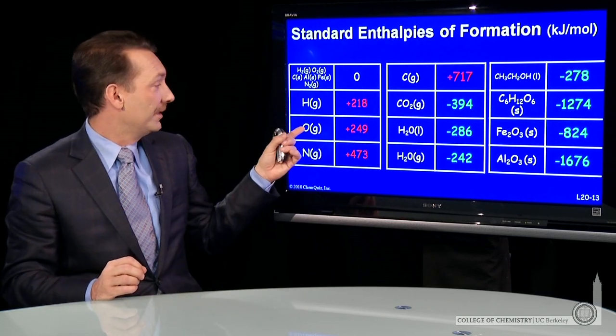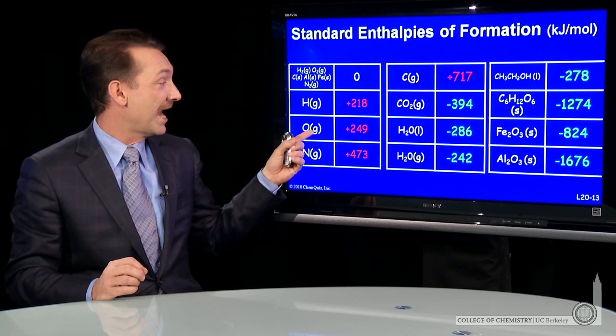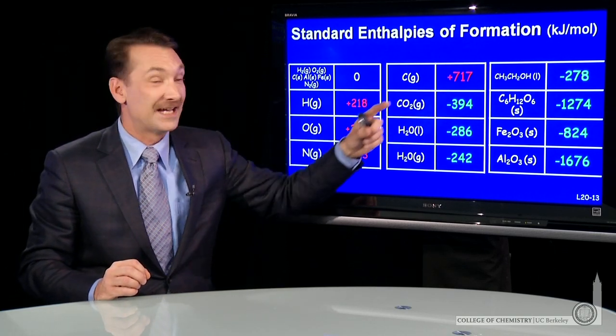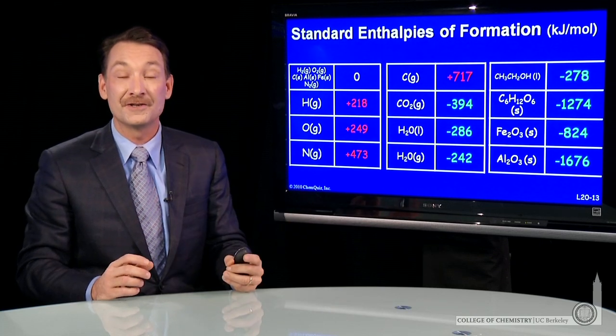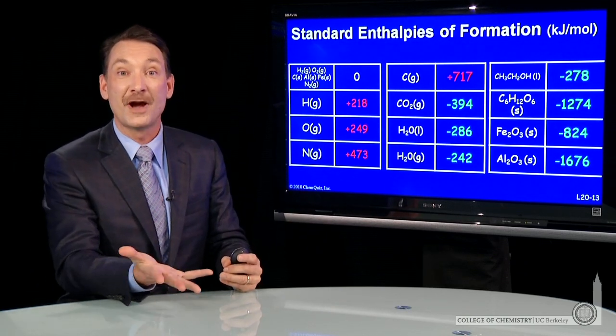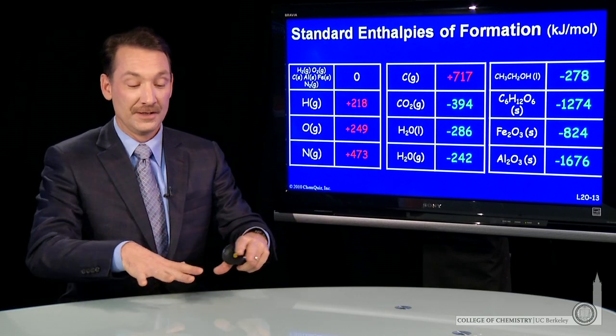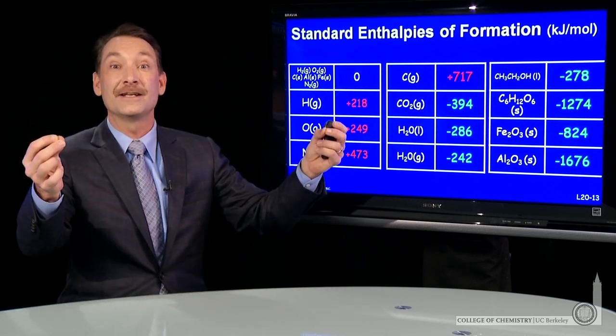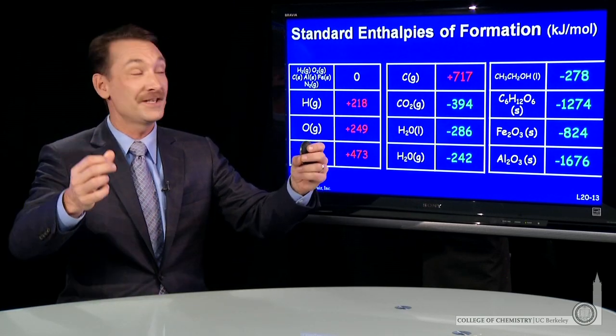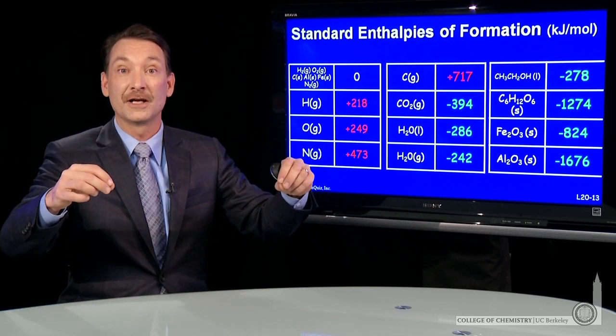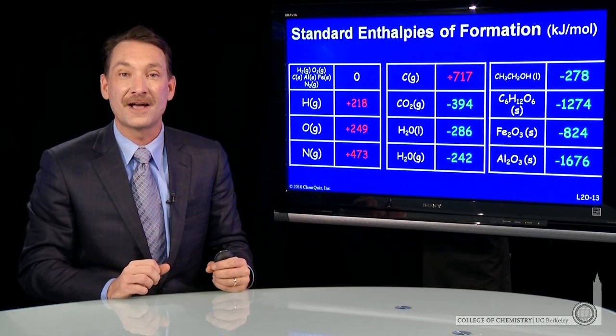Oxygen is the same. Oxygen atoms would be formed from diatomic oxygen molecules. Here's carbon gas in its standard state. The standard state of carbon would be carbon graphite solid, so this would be atomizing solid graphite into carbon atoms in the gas phase. Of course, that requires energy to break all those intermolecular carbon bonds and atomize solid carbon.